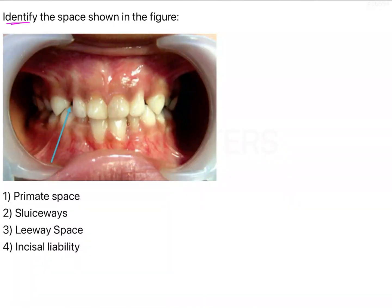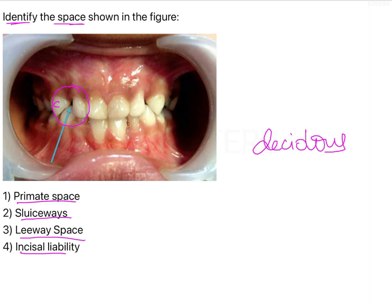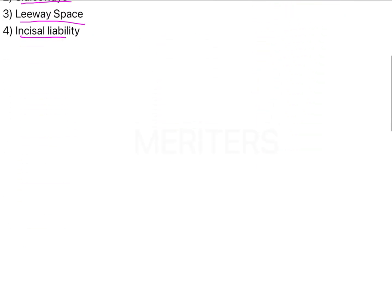In this question we have been asked to identify the space that is shown in the figure, marked by this arrow here. So this space between the deciduous lateral incisor and the primary canine — we have been asked to identify whether this is primate space, leeway space, or the incisor liability. What we can identify from this image is that the deciduous dentition is present in the arch, and we have to identify the space that is present in the deciduous dentition.